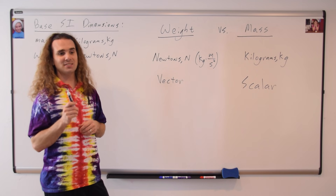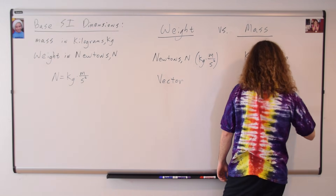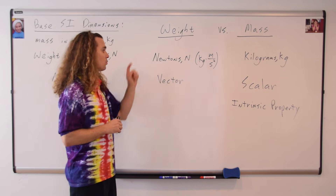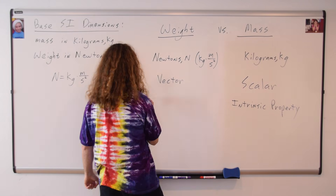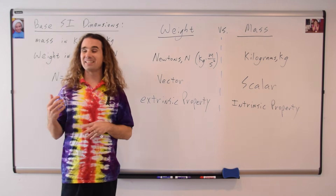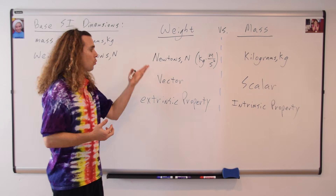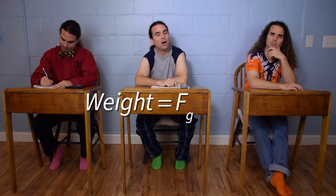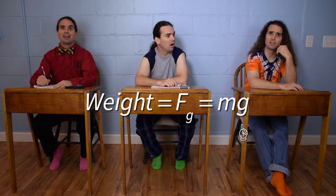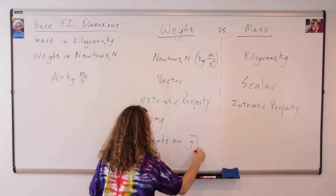One more difference. Billy: I think your weight changes if you go to a different planet, but your mass doesn't change. Mr. P.: That is correct, Billy. Mass is an intrinsic property, which means it only depends on itself — it is an inherent property of the object. Whereas weight is an extrinsic property, which means that weight is actually also determined by something external to the object. Bo, what is it that's external to the object that helps determine the weight? Well, the equation for weight, or the force of gravity, is that it equals the mass of the object times the acceleration due to gravity. So, the weight of an object would depend on little g, the acceleration due to gravity.